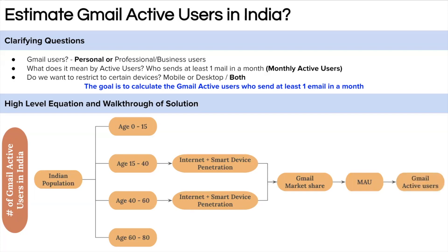Now let's fill in the numbers. India's population is around 1.4 billion. We assume 20% lies between ages 0–15, that's around 280 million; 30% lies between ages 15–40, around 420 million; and another 30% lies between ages 40–60, also around 420 million. These are fair estimates — remember the interviewer is more interested in the approach than the exact numbers.